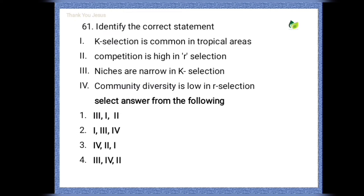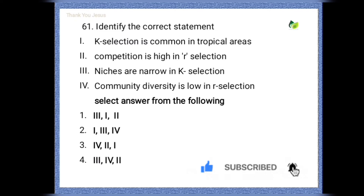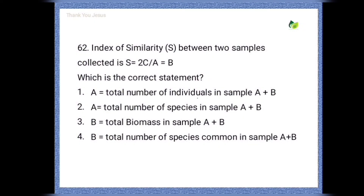Identify the correct statements: K-selection is common in tropical areas; competition is high in r-selection; niches are narrow in K-selection; community diversity is low in r-selection. The correct option is the second one — that means first, third, and fourth statements are correct.